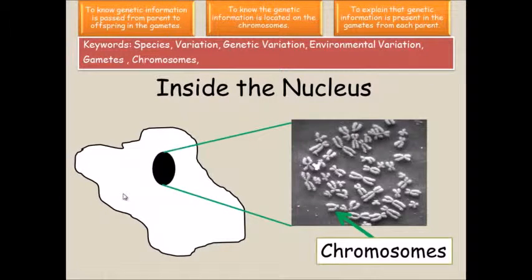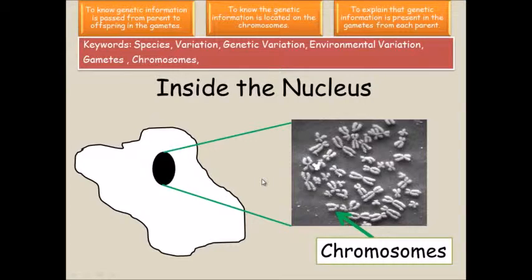This diagram shows a typical cell with a typical nucleus that contains 23 pairs, or 46 chromosomes, of which you have roughly between 23,000 to 24,000 genes and roughly 3 billion pieces of DNA.